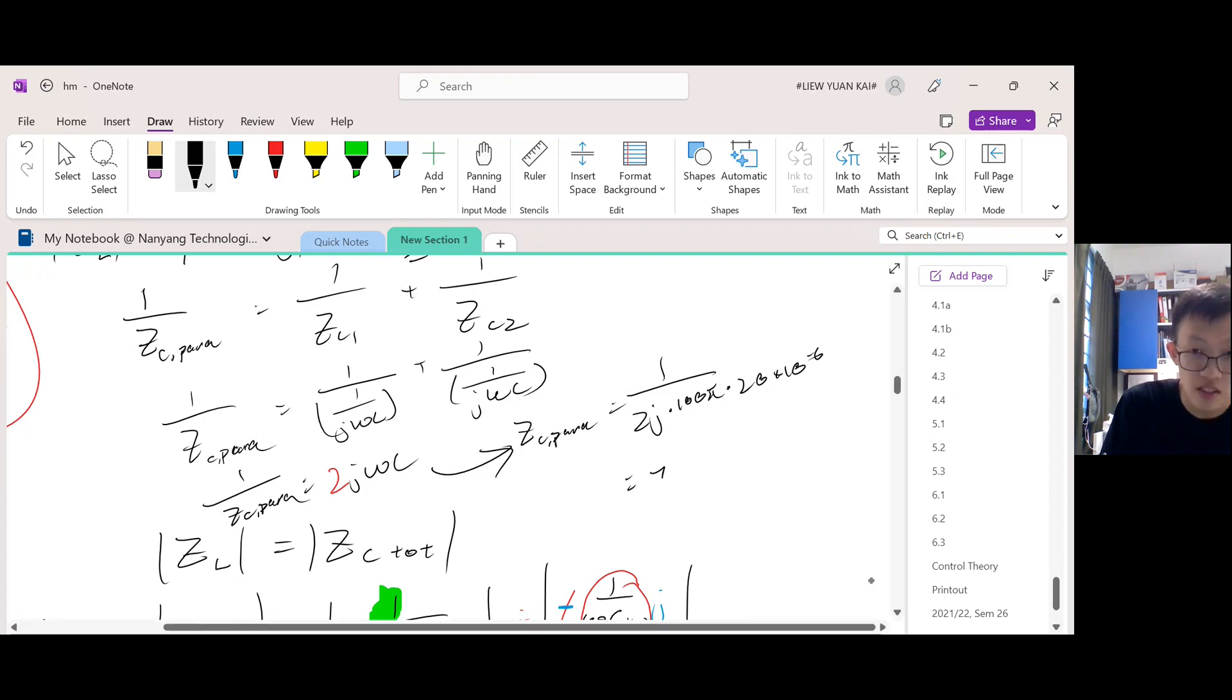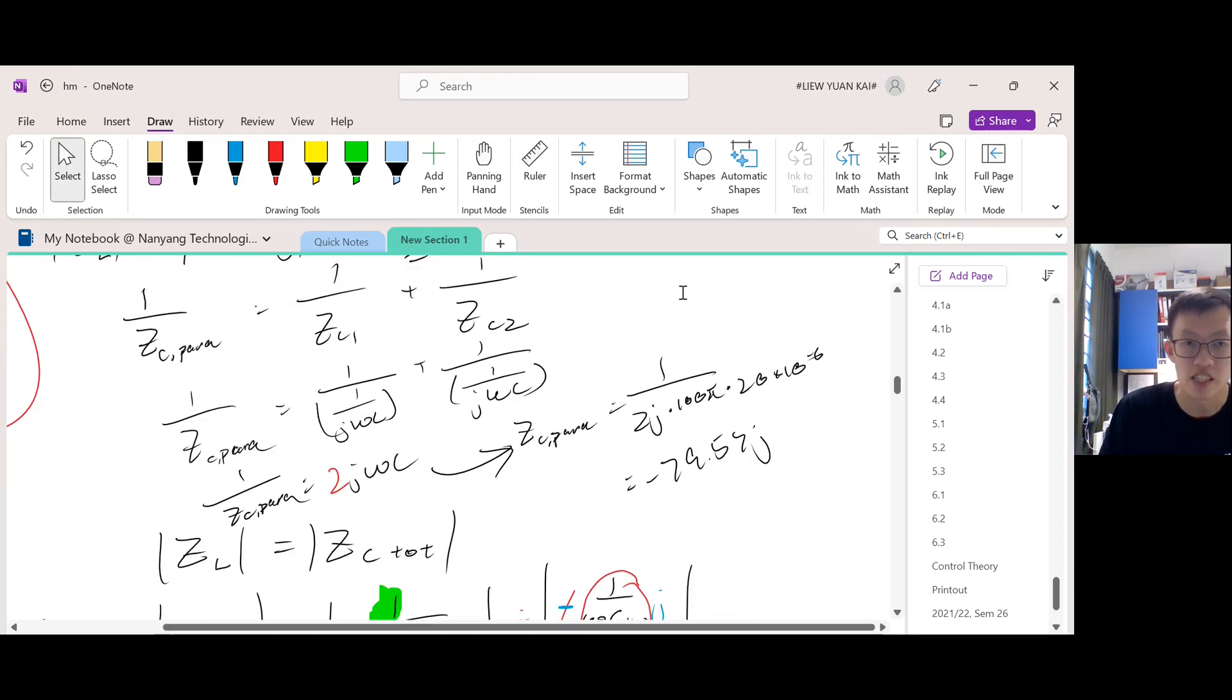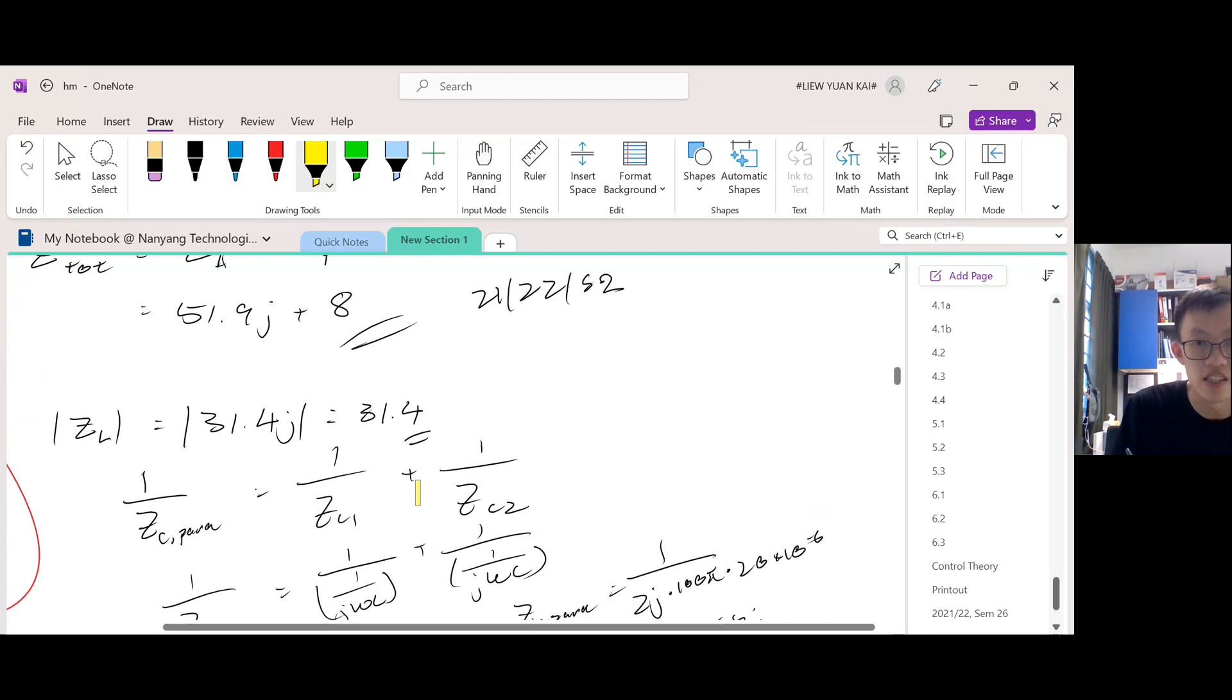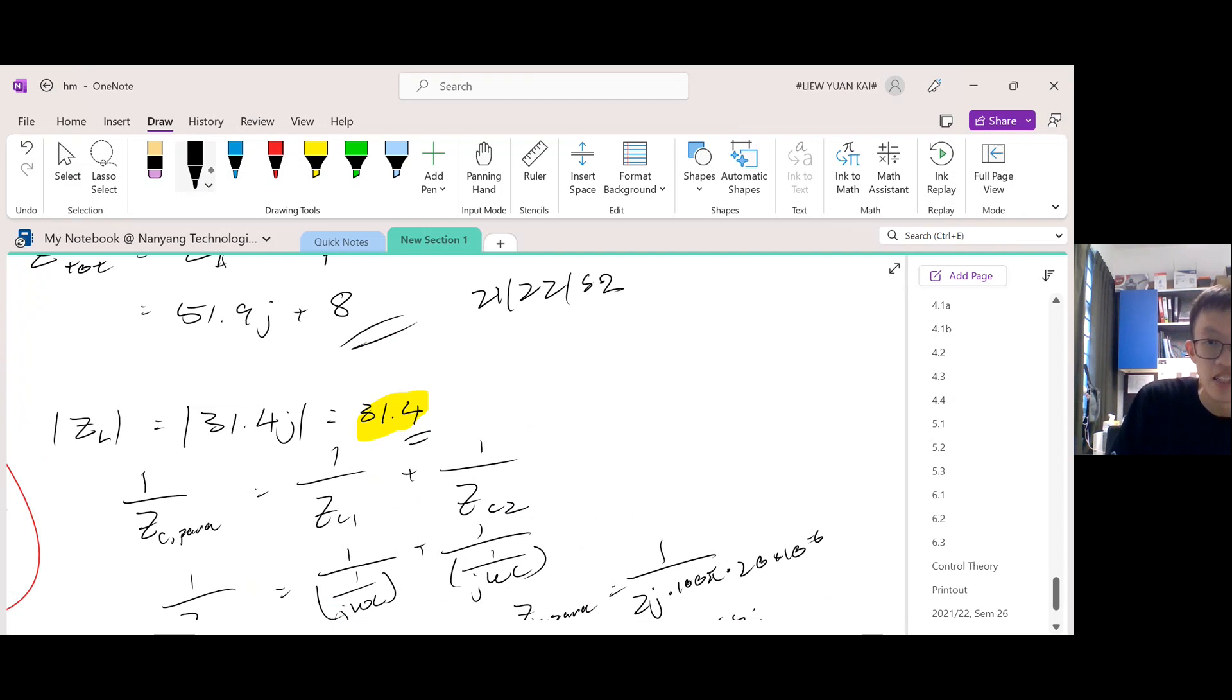This should be negative 79.57j. What we're supposed to do here is check whether the magnitude of this will match the magnitude of the inductor's impedance. Let's extract the magnitude first. If I want to take this magnitude, 79.57j, I just drop the negative, extract the coefficient, and that should be 79.57. Ask yourself: is this equal to this? The answer is no.